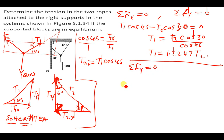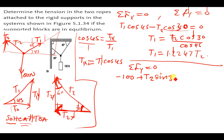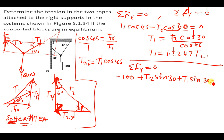Now for the summation of forces in the y direction, also equal to zero. We have 100 newtons pointing in the negative direction, the y component of T2 pointing positive — since we used cos 30 in x, the y component is sin 30 — and the y component of T1 pointing upward, which is opposite to 45 degrees, so we use sin 45.